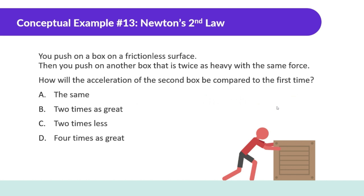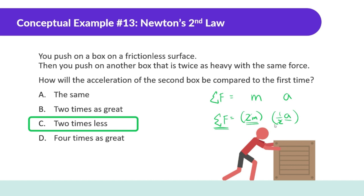Similar question: you push on a box on a frictionless surface, then you push on another box that is twice as heavy with the same force. How will the acceleration of the second box compare to the first? The net force is the same, but the mass is two times greater. So the acceleration is going to be less — specifically half — because the twos cancel out and equal each other. Two times less, or half.